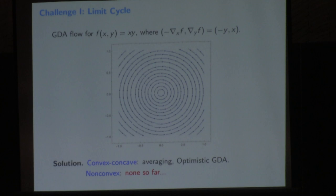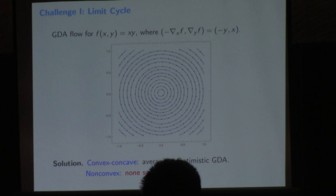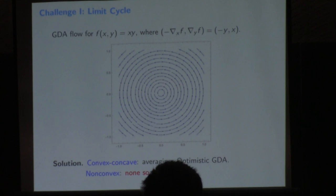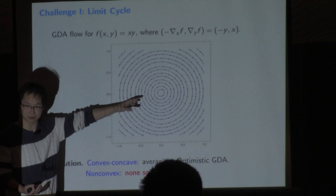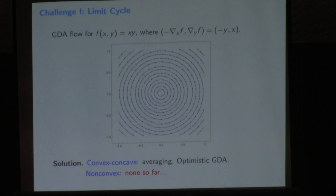There has been a lot of work designed to deal with this limit cycle problem, focusing on last-iterate convergence instead of averaging. Classical results with gradient descent ascent or extra-gradient require averaging and do not guarantee last-iterate convergence. Some recent algorithms do guarantee last-iterate convergence to Nash equilibrium. However, in non-convex or non-concave settings, the limit cycle structures are dramatically different, and as of today nobody really knows how to deal with them.